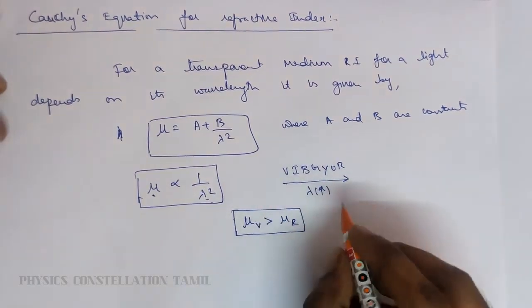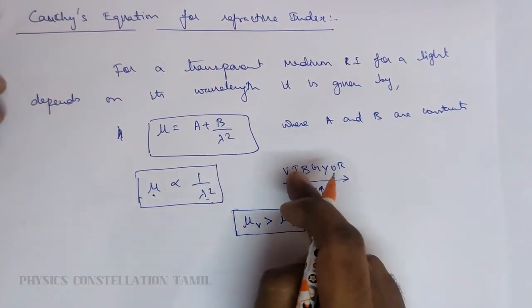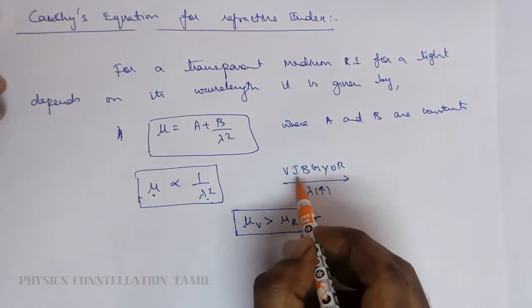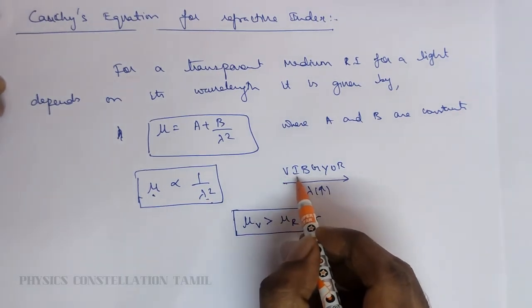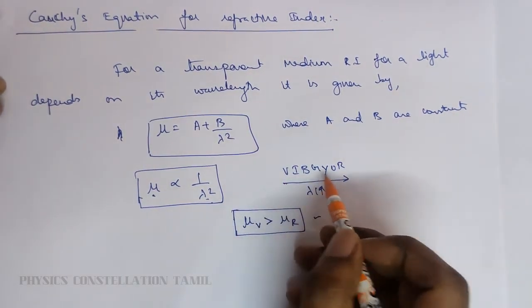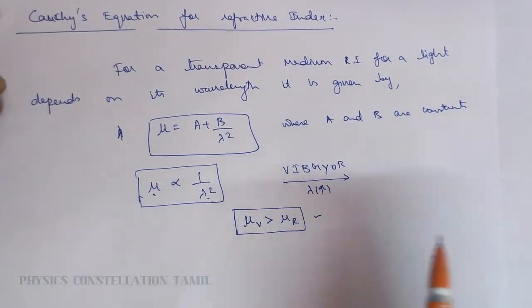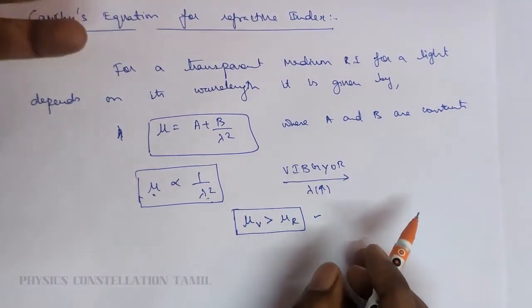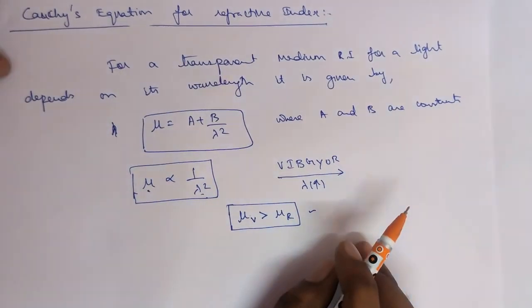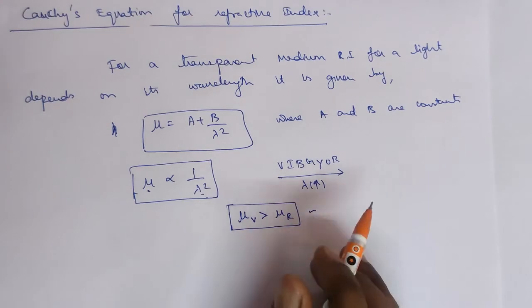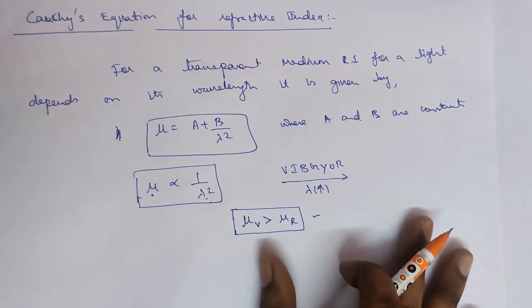Because of this reason we are writing this. So whichever having more refractive index will bend the light more, shift the light more, or deviate the light more. Based on this we will see the dispersion.